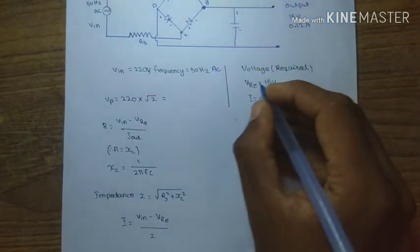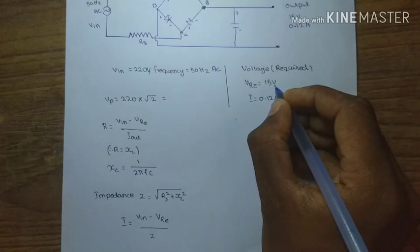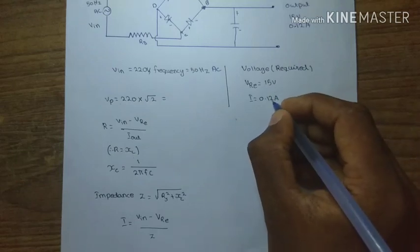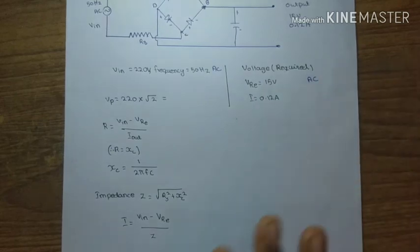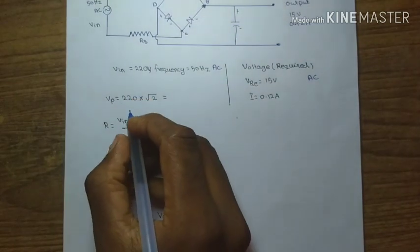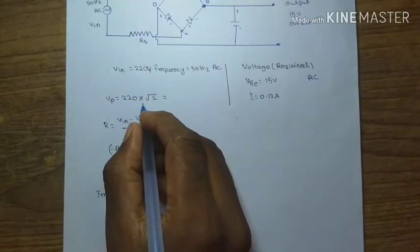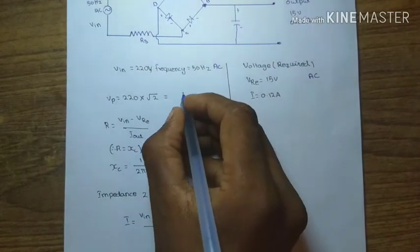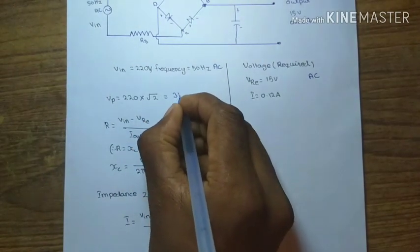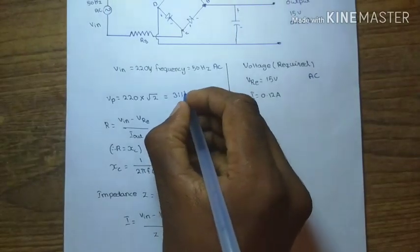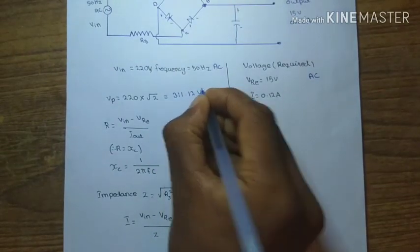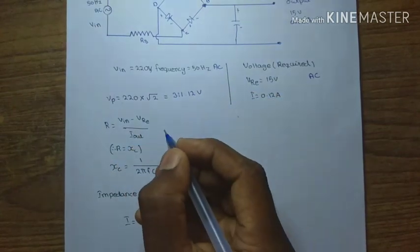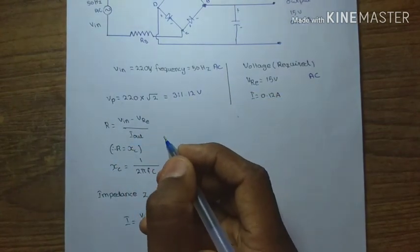Output voltage is 15 volt and current will be 0.12 amps DC current. Next we find the peak value of AC current: 220 volt into root 2 is equal to 311.12 volt. Next we calculate the capacitance value.